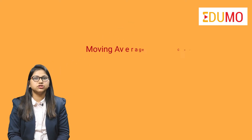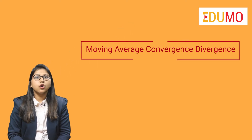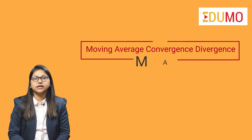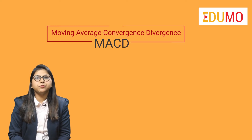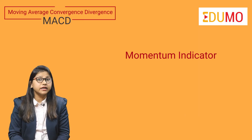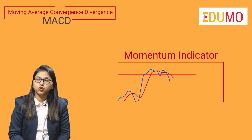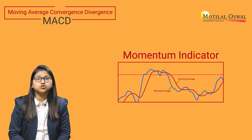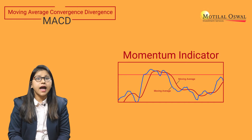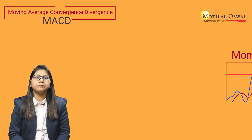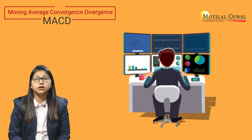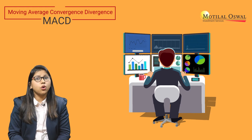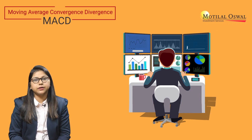Hi, in this video we will be discussing about Moving Average Convergence and Divergence or MACD, which is basically a momentum indicator that indicates the relationship between two moving averages. It is one of the most popular technical indicators and it is used by many technical analysts all around the world. It is also a trend following indicator.